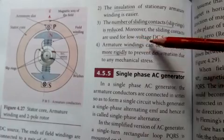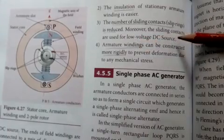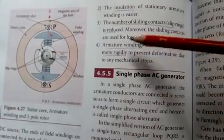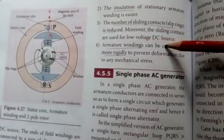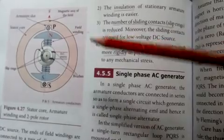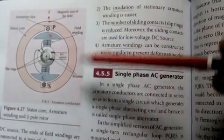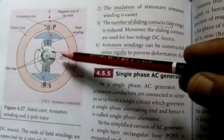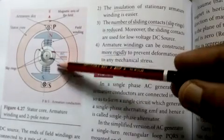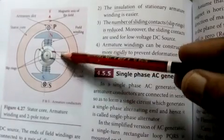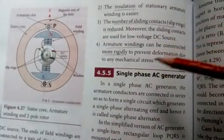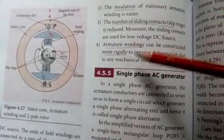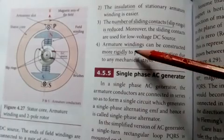Third, the number of sliding contacts and slip rings is reduced. Moreover, sliding contacts are only used for the low voltage DC source. Outside the AC source, there are no slip rings — the slip rings are only for the DC source.